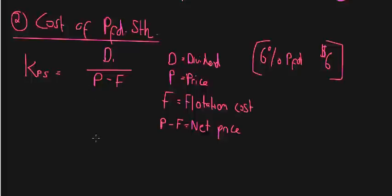P minus F is really the net price. The flotation cost needs to be deducted from what we're getting in because we're paying this F out. That's a cash outflow to some investment bank to help us issue this preferred stock. That's the cost of preferred stock. Now, let's move on to number three, which is the cost of common stock.